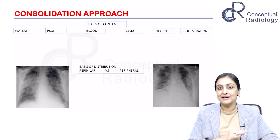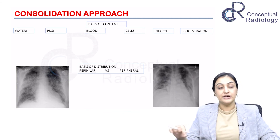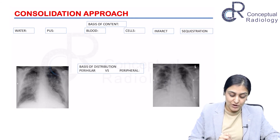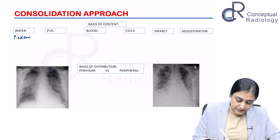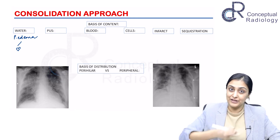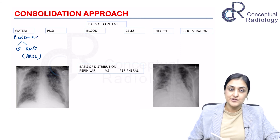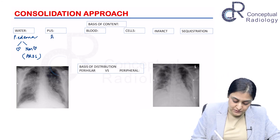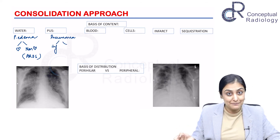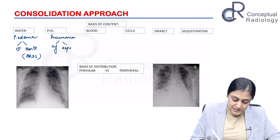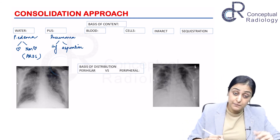Now comes the clinical history. Depending on the content, what could be the diagnosis of a consolidation? Consolidation is a radiological finding — what is the clinical diagnosis? The differentials depend on the content of the alveolar filling. If water is the content, we call it pulmonary edema — cardiogenic because of heart failure, or non-cardiogenic which we call ARDS. If there is pus, we call it pneumonia — infective lobar pneumonia, most commonly bacterial, or bronchopneumonia, or aspiration.